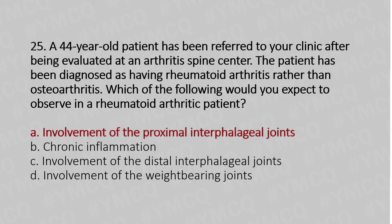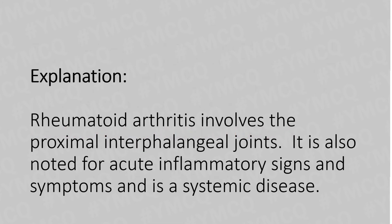The answer is Option A: Involvement of proximal interphalangeal joints. Rheumatoid arthritis involves the proximal interphalangeal joints. It is also noted for acute inflammatory signs and symptoms and is a systemic disease.